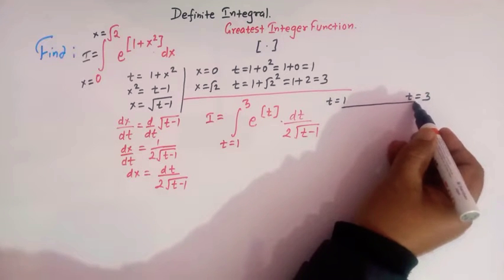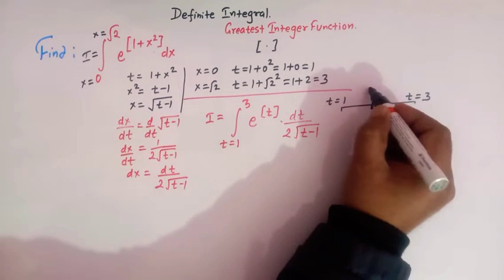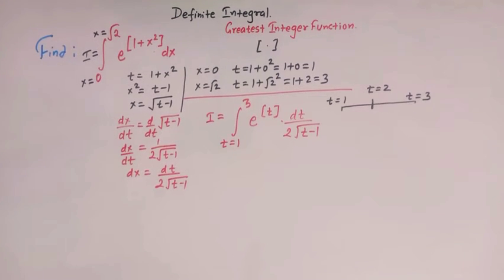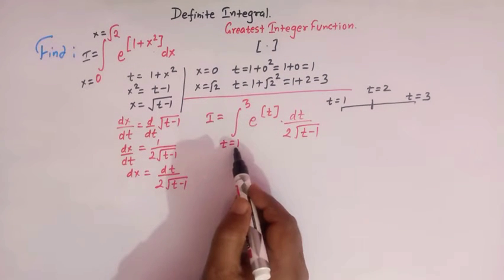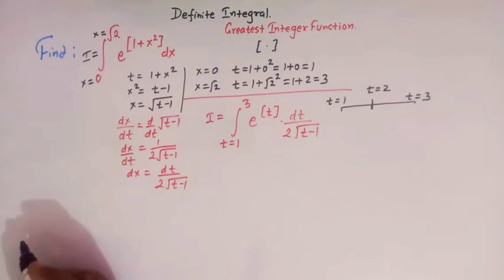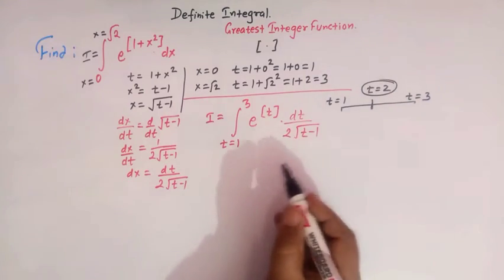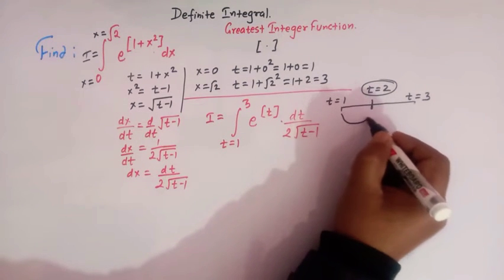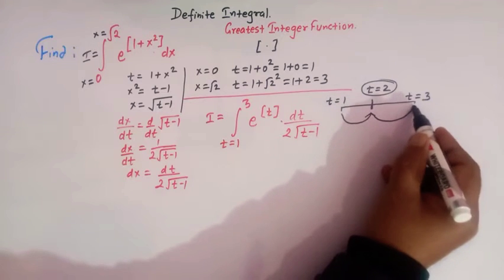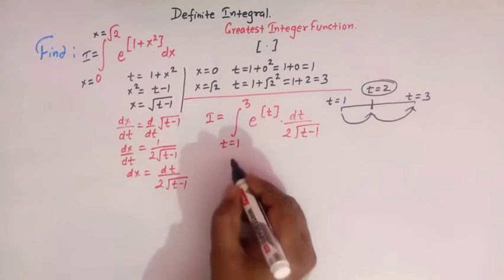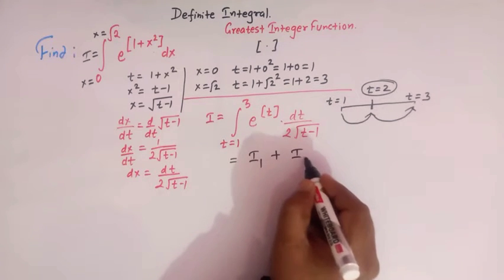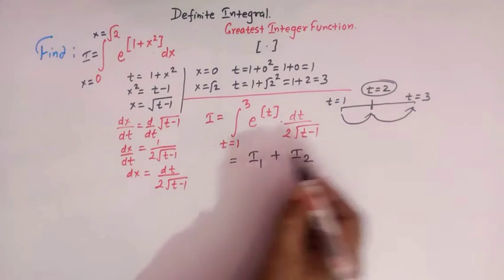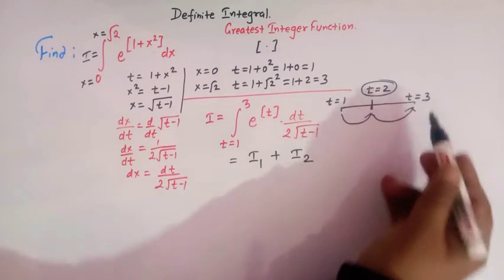Now we see that the variable t varies from 1 to 3, and between 1 and 3 we have the integer 2. So the limits of integration are from t equals 1 to 3, and between 1 and 3 we have the integer 2. So we have to break this integral at t equals 2: first integrate from t equals 1 to 2, and then from 2 to 3. We'll break this integral as a sum of two integrals, I1 and I2.